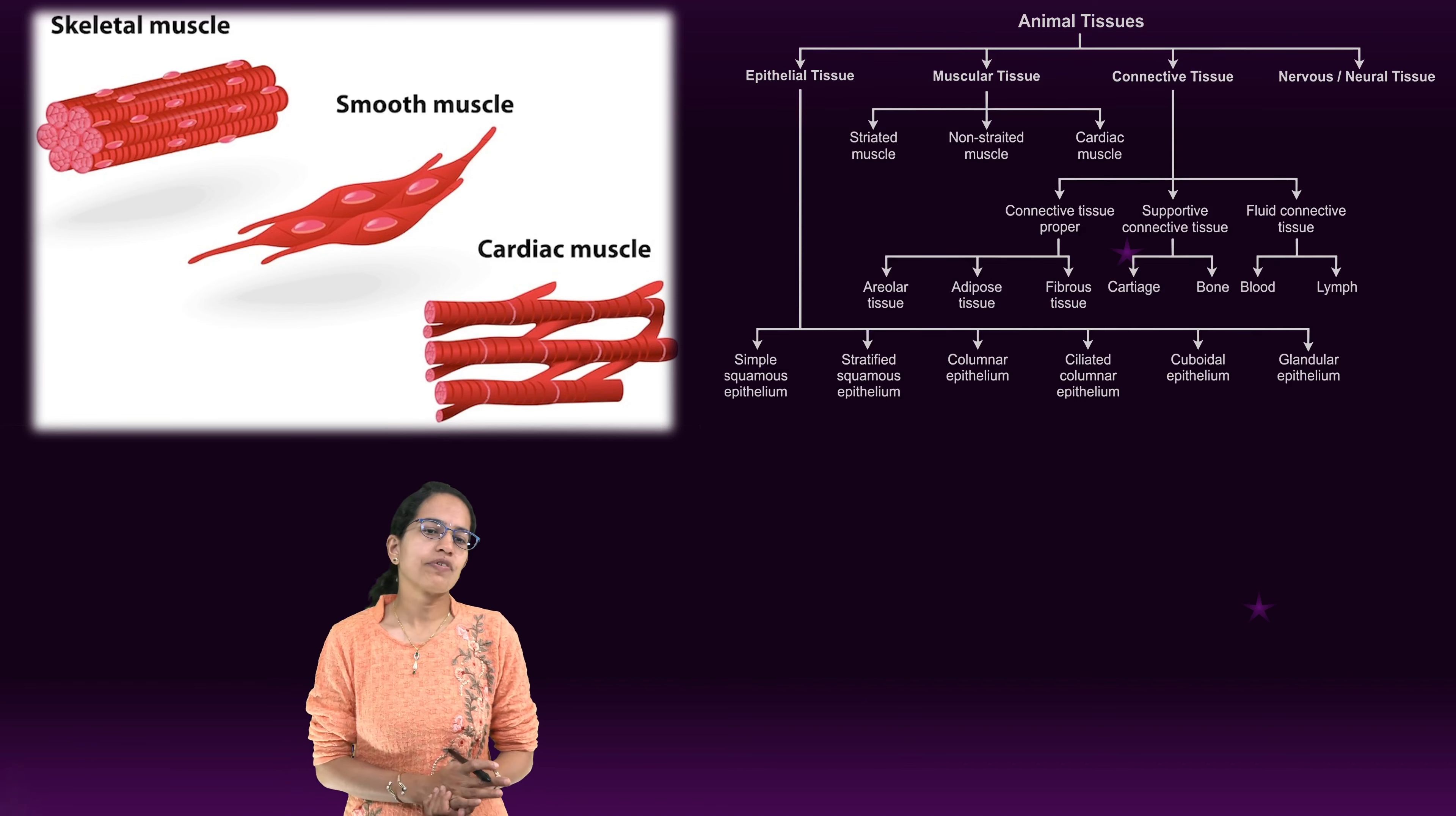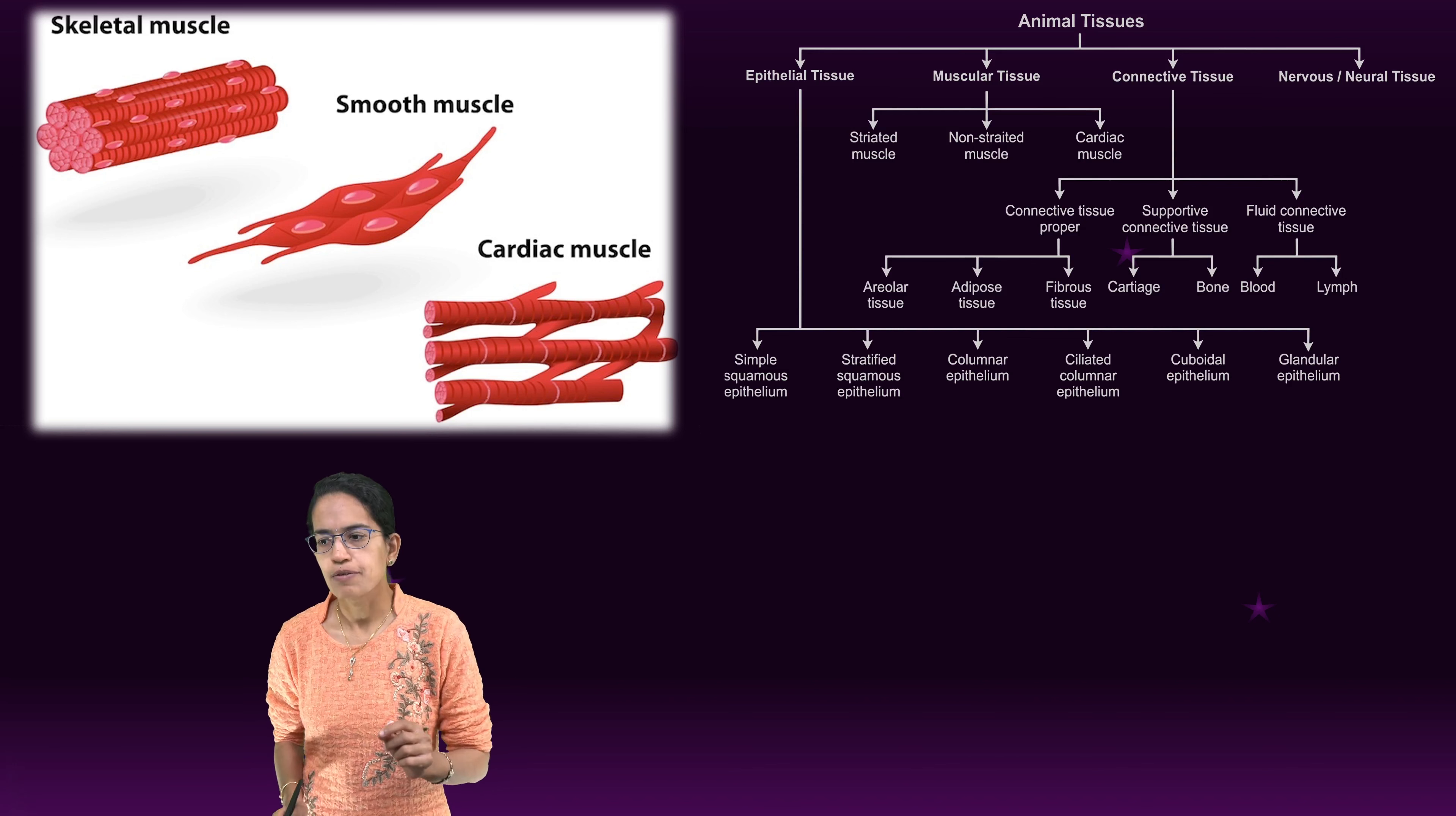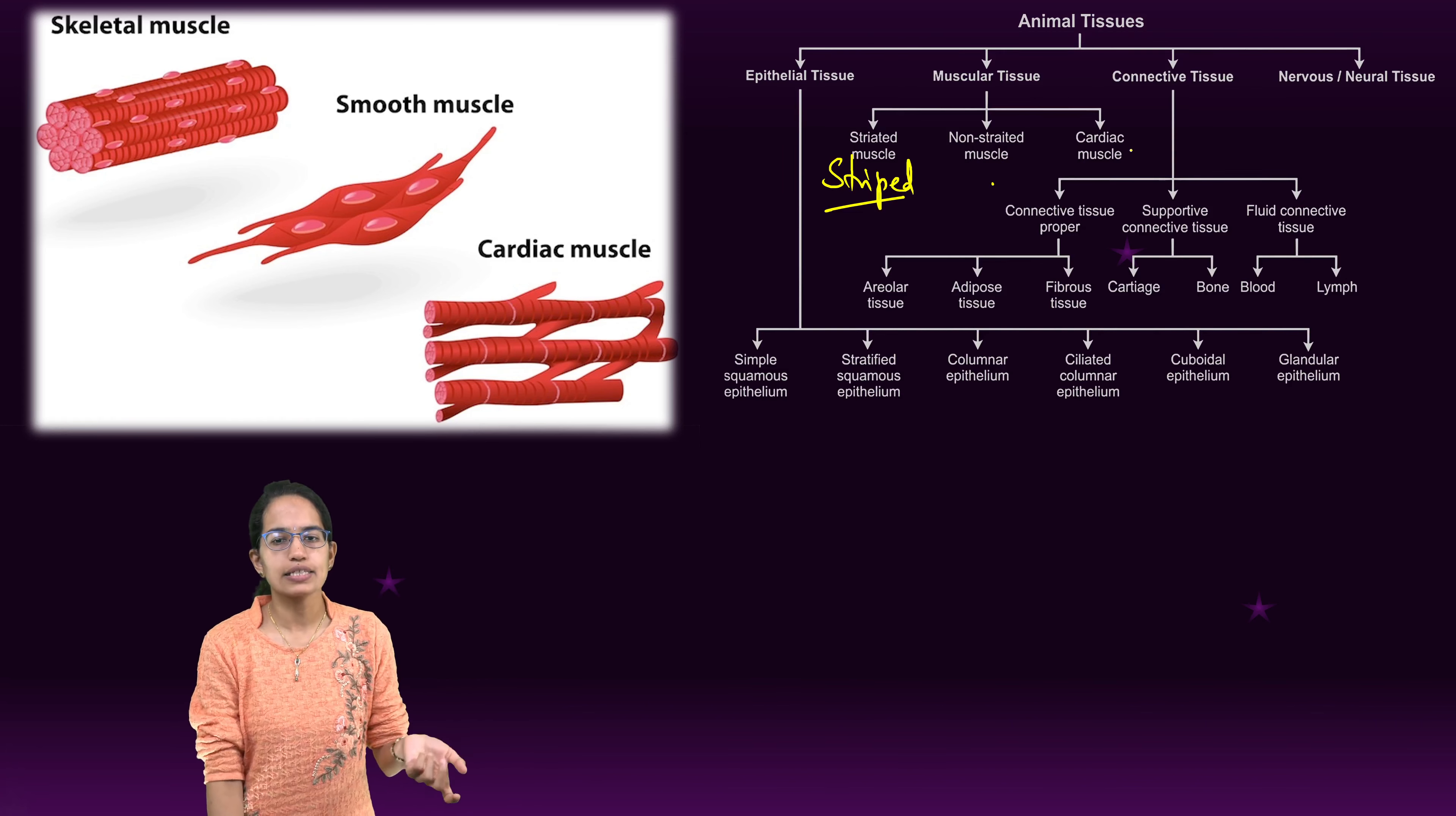Under muscular tissue, we classify it as striated, non-striated, and cardiac. The striated ones are also known as striped, non-striated are known as unstriped, and then there is cardiac.